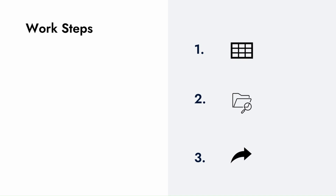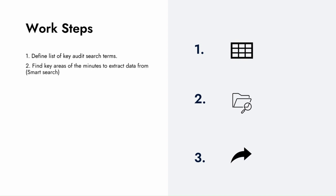For our work steps, we'll begin by identifying a list of our key audit search terms. We'll then find key areas of the minutes to snip by using the smart search functionality. Once the key data is extracted, add the audit implications.